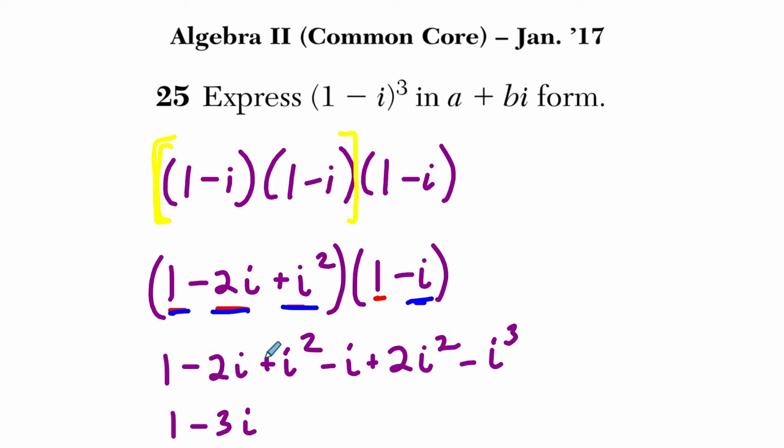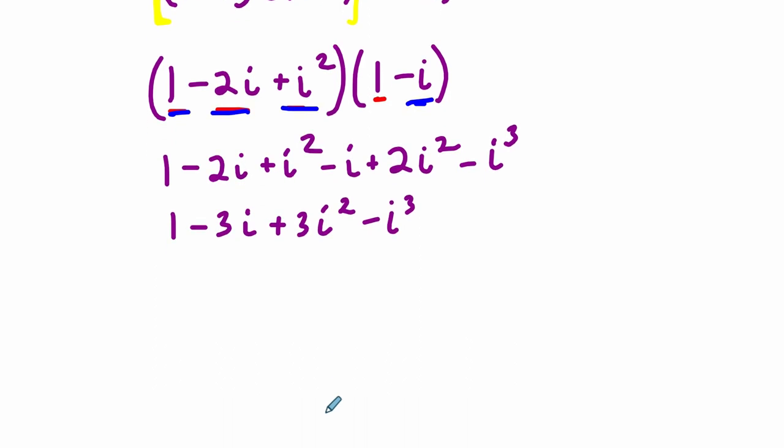And then I have plus i squared, plus 2i squared, that's plus 3 groups of i squared, and then minus i cubed. So now I have this set up and I simplify.